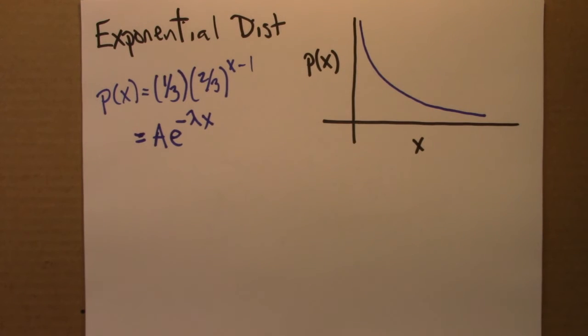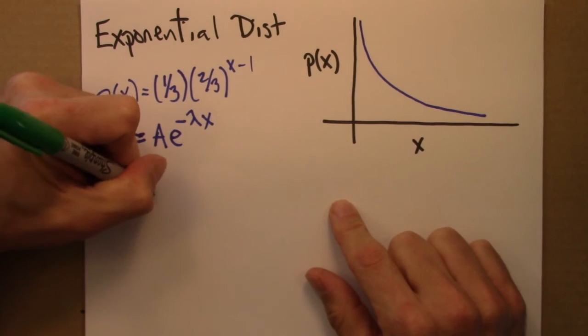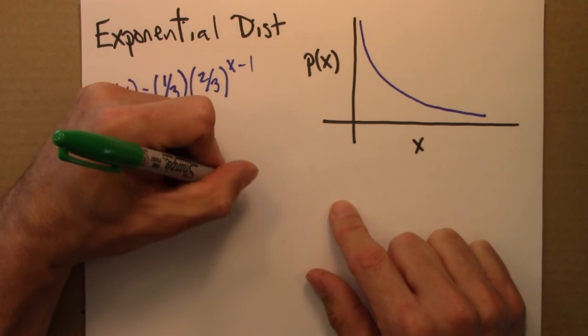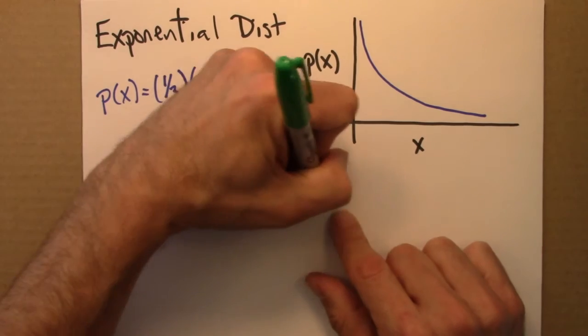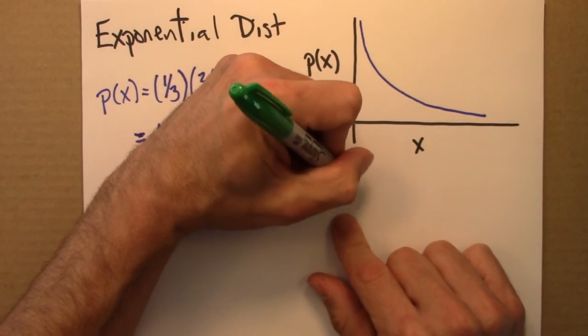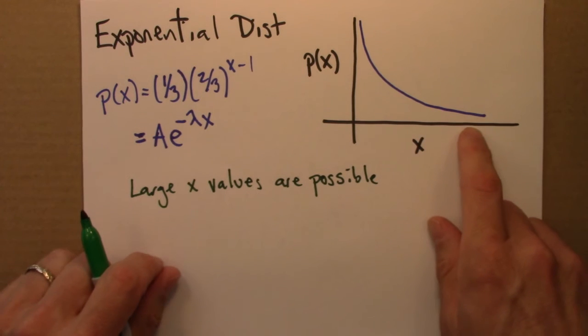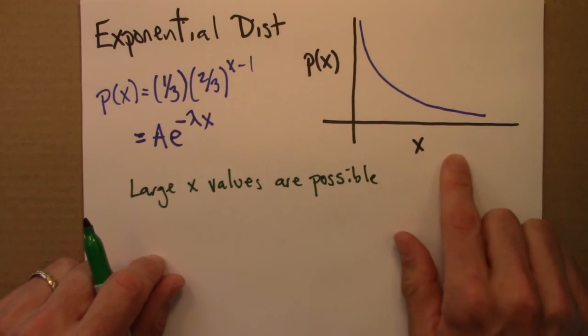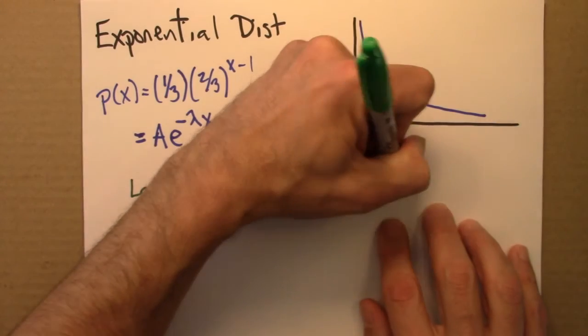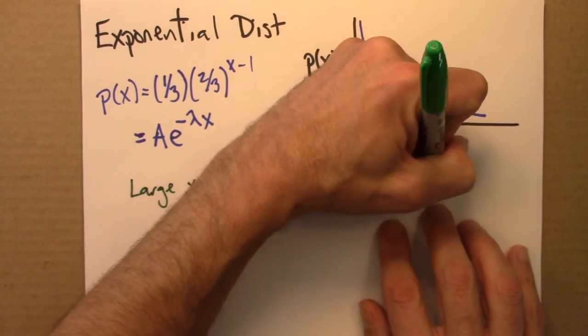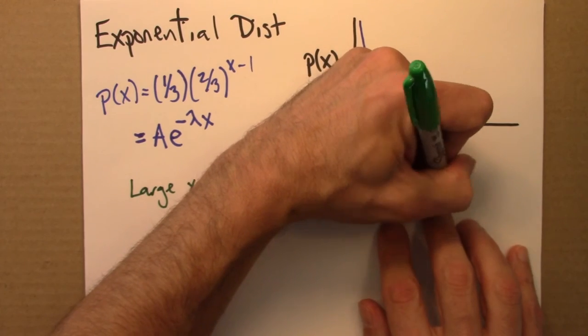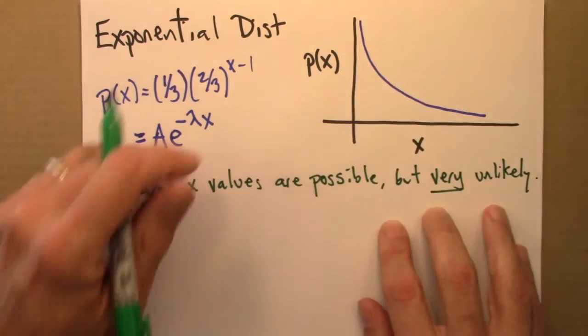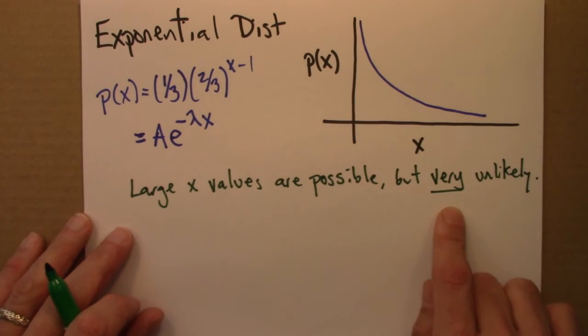So some properties of this. Large x values are possible. So it could be the case that it takes me 20 times in order to get the crumpled up piece of paper in my recycling bin. But that's very unlikely. We'll talk more about just how unlikely in the next subunit.